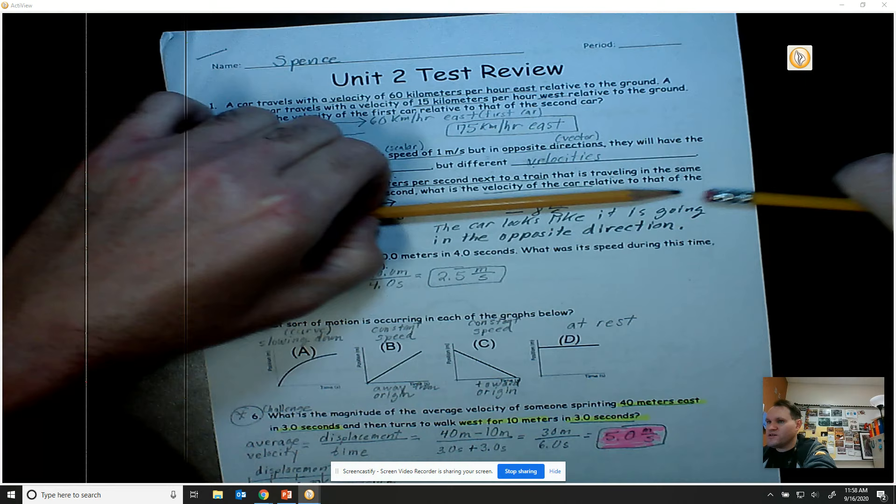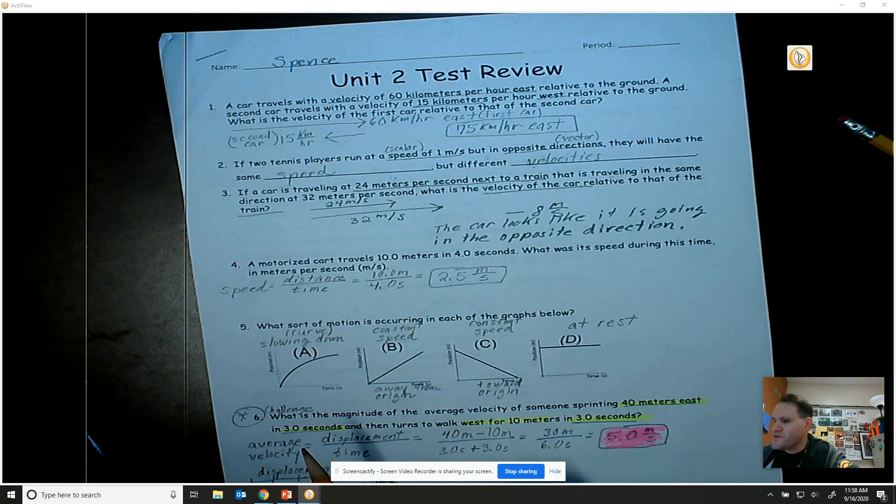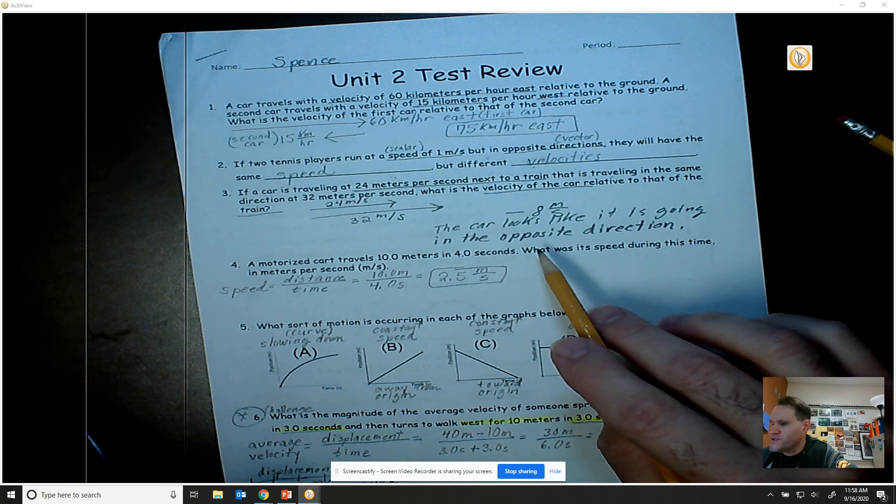It's going to look like the car is going in the opposite direction at eight meters per second. So that's why I put that minus sign, just to say that the car looks like it's going in the opposite direction that the train is already going.